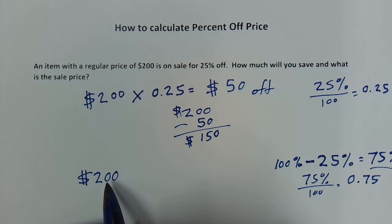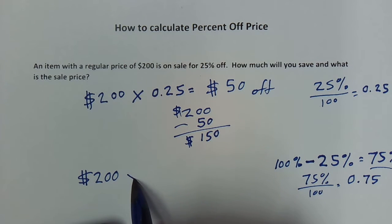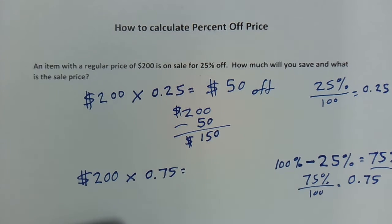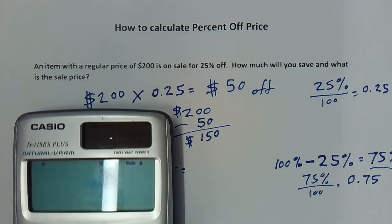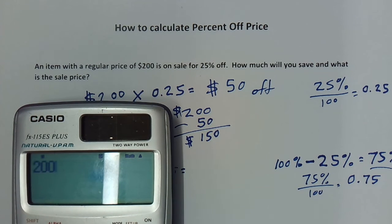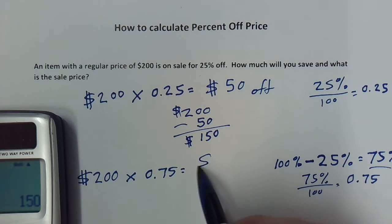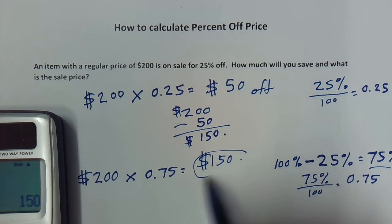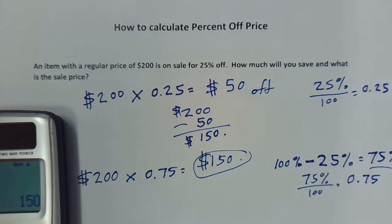I want to find out what the sale price is, which is 75% of $200. I just take 200 and multiply it by 0.75. Let's do it on the calculator — 200 times 0.75 — and that gives me $150, which we already knew was the sale price.